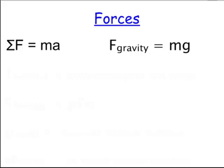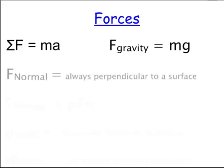All of our forces are in units of newtons. You don't have to write kilograms times meters per second squared, because that's mass times acceleration — we just write newtons. We also have the normal force, which is always perpendicular to a surface. But it has to be on a surface, so if an object is up in the air, it doesn't have a normal force.